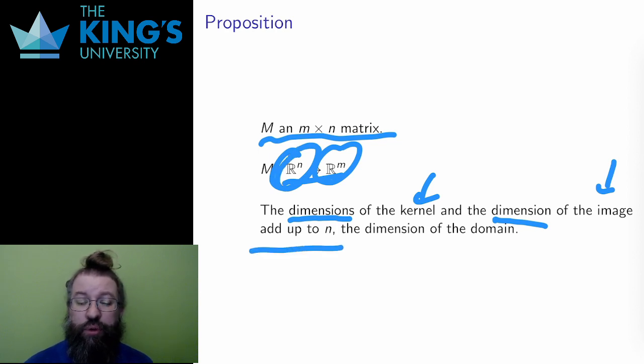Before I move on to the proof, what does this mean? Well, it means that I can understand the dimension of the domain by what is kept and what is lost. The kernel is things that are sent to zero. If the kernel has dimension one or two, that means a whole line or a whole plane is sent to zero under some kind of projection.